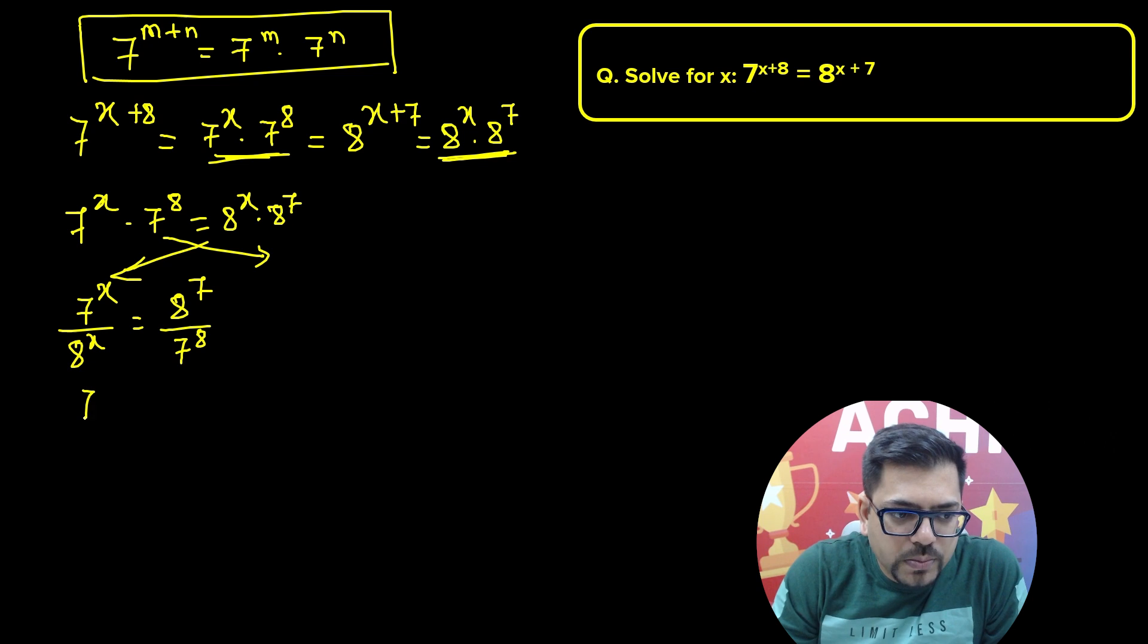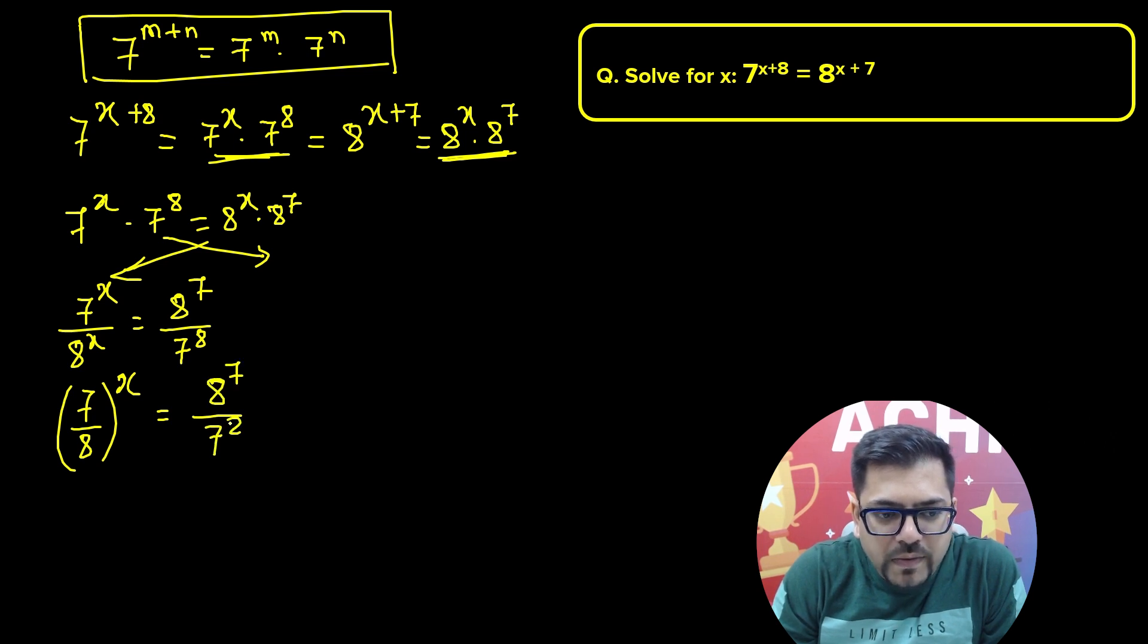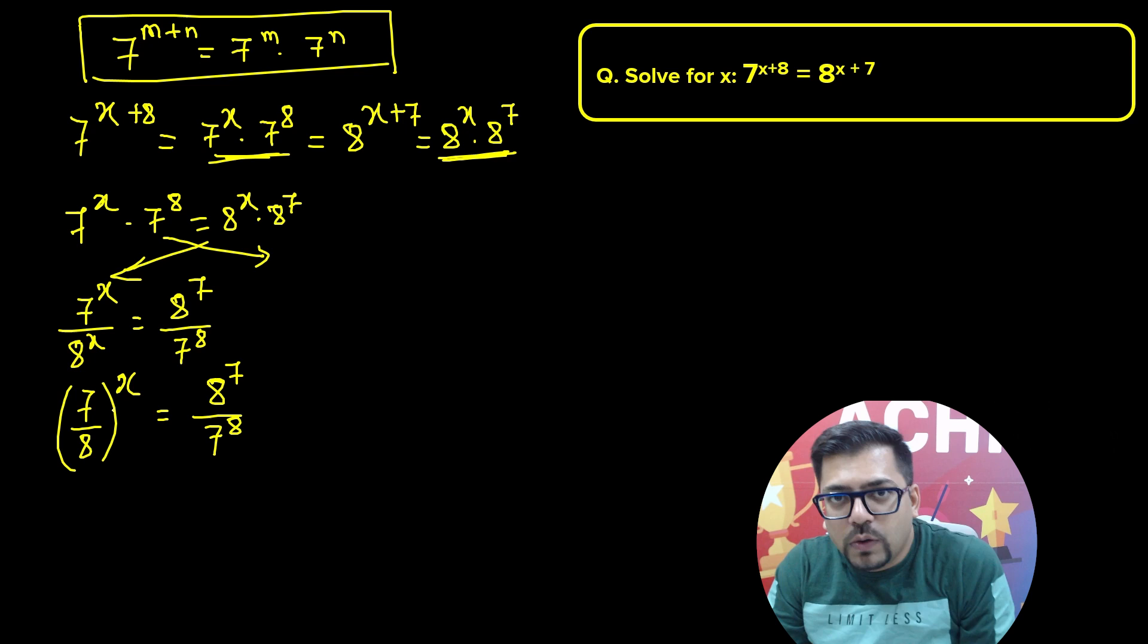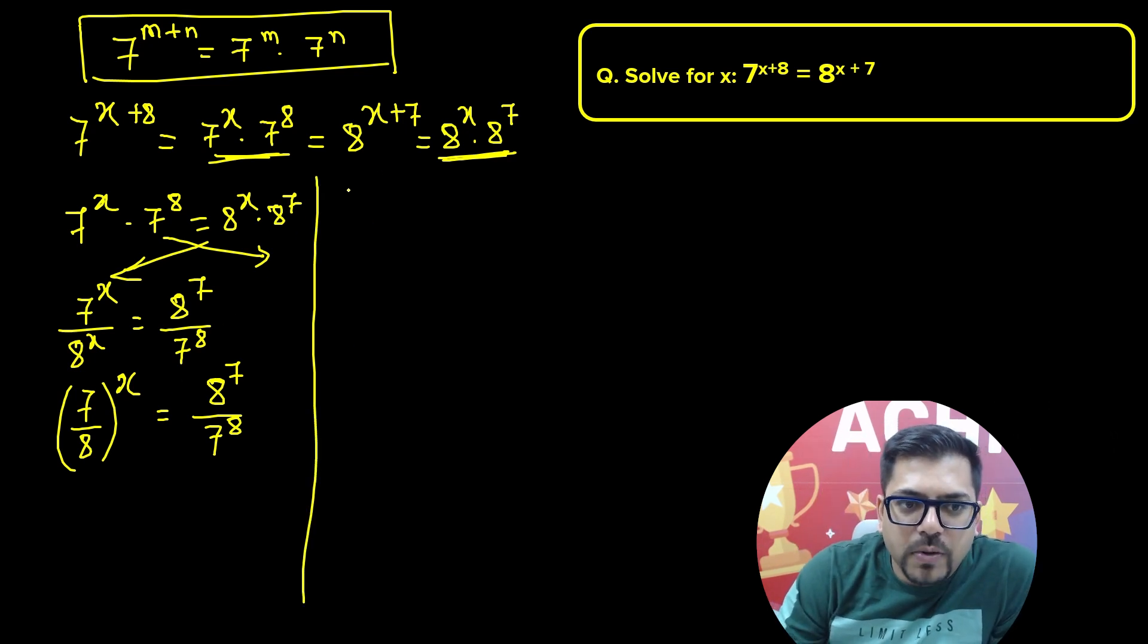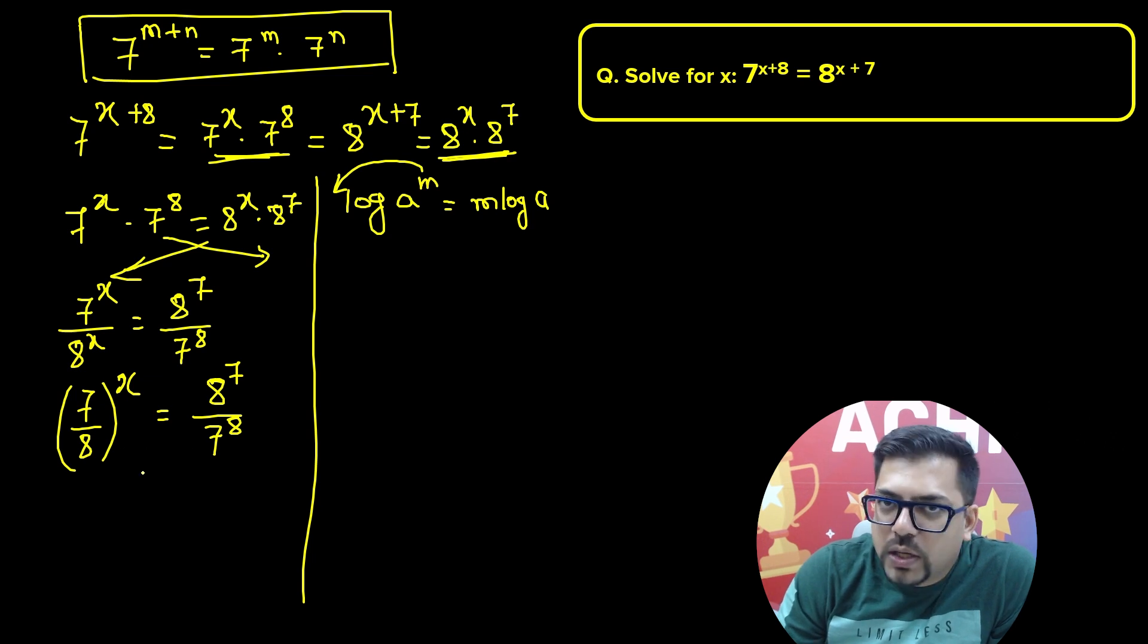Now for these two terms you can easily write 7 by 8 whole raised to power x, but here you wouldn't be able to write it because both the powers are not same. So now we'll have to take logarithm. Why? Because we have a property in logarithm: if we have log a raised to power m, then this argument's power comes to the multiplication, so it becomes m times log a. So I'll take logarithm both sides.